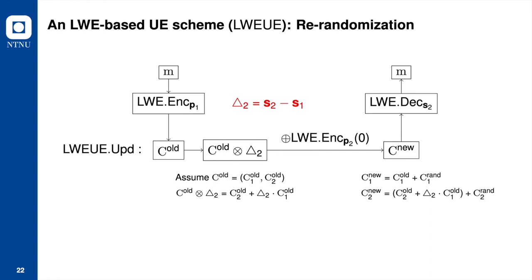The update algorithm re-randomizes the mid-term ciphertext to a fresh new ciphertext by adding a random ciphertext — an encryption of the zero element. The final output of the update algorithm is a valid updated ciphertext that is randomly distributed, ensuring the security of this UE scheme.